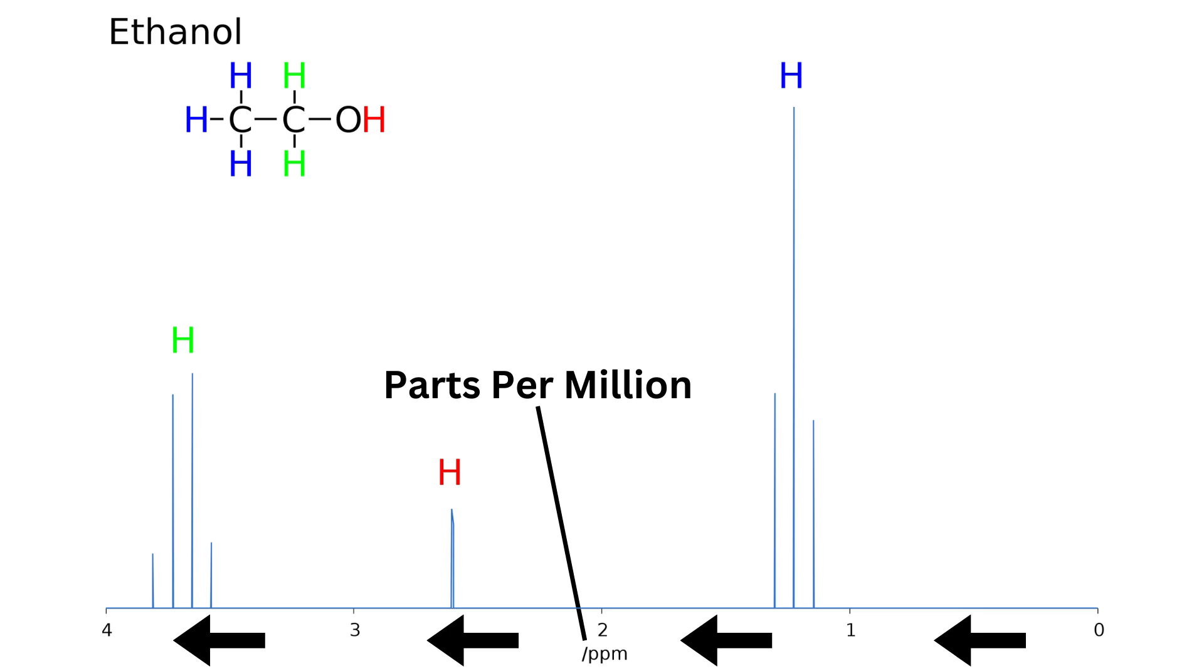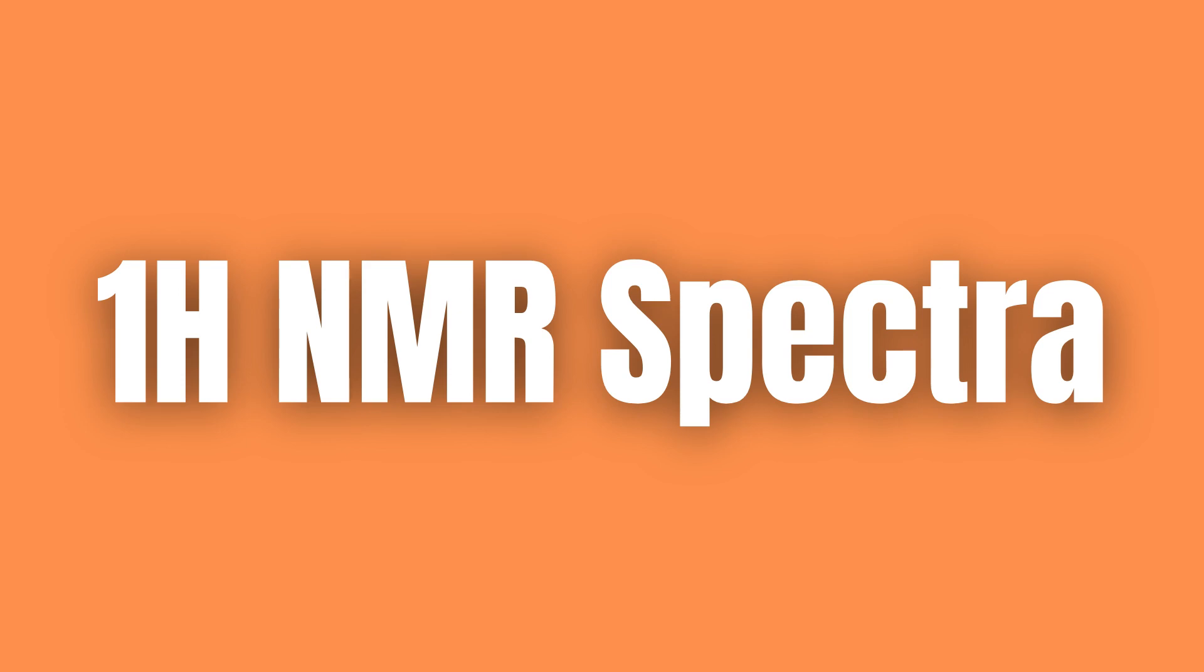The y-axis is expressed relative to the reference molecule, often TMS, which can be seen furthest to the right. For simplicity, we will only consider proton NMR spectra moving forward.